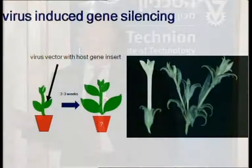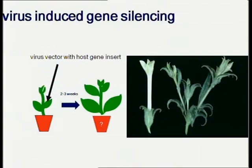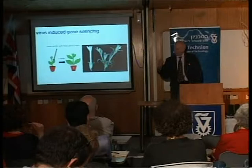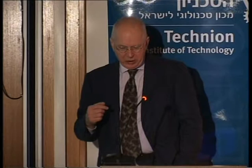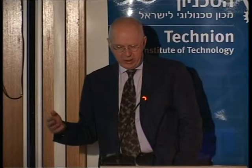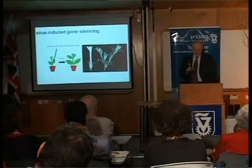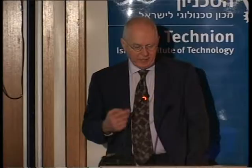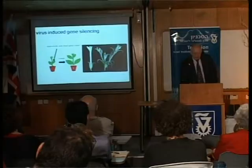The same concept has been developed in worms. Andy Fire discovered that you can feed worms on bacteria that make double-stranded RNA—they take up that double-stranded RNA out of their feed. If the double-stranded RNA corresponds to a gene, they silence that gene. There are collections of bacteria making double-stranded RNA corresponding to all the genes in the worm. You feed your worms on each of those bacterial strains, and from the phenotypes you can infer the function of the genes. It's a very useful tool in functional genomics.